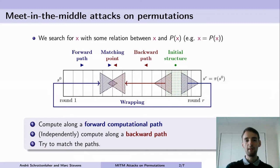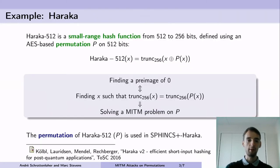A typical example for this and how it applies to cryptographic primitives is the Haraka hash function. It's a small range hash function so it only hashes inputs of 512 bits to 256 bits and it's defined using a permutation on 512 bits using AES operations. The way it does it is simply take the input and XOR it to the output of the permutation and truncate this to 256 bits. For example, finding a preimage of zero means finding an input x such that this truncation is equal to the truncation of the output P of x. This is exactly solving a meet-in-the-middle problem on the permutation P.